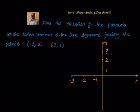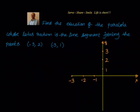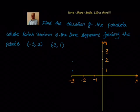Find the equation of the parabola whose latus rectum is the line segment joining the points (-3, 2) and (-3, 1). Let us roughly draw these points and see how the latus rectum will be. We have the point (-3, 2) and the other point is (-3, 1).